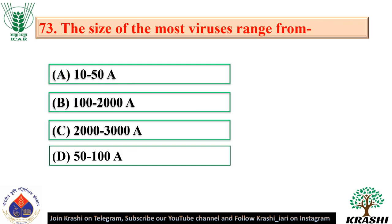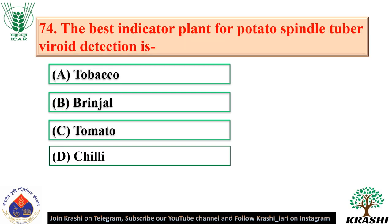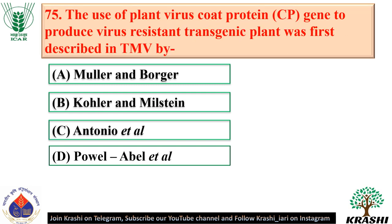Question number 73: The size of most viruses ranges from 100 to 2,000 angstroms — option B. Question number 74: The best indicator plant for potato spindle tuber viroid detection is tomato — option C. Question number 75: The use of plant virus coat protein gene to produce virus-resistant transgenic plant was first described in TMV by Pavel and Abel et al. in 1986 — option D.